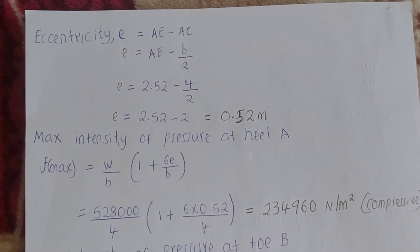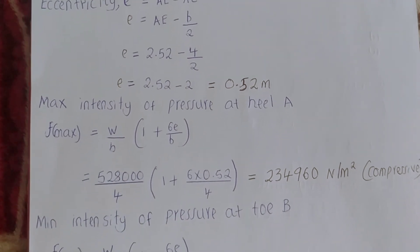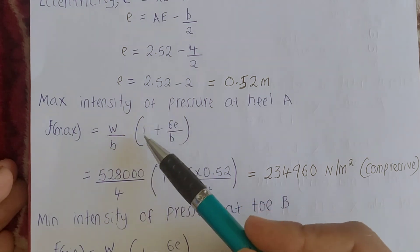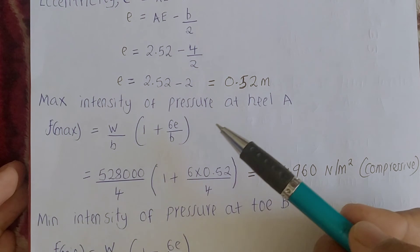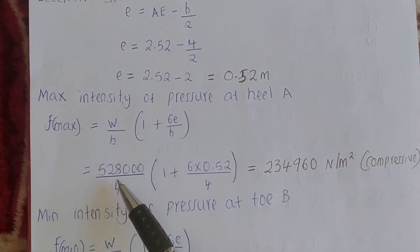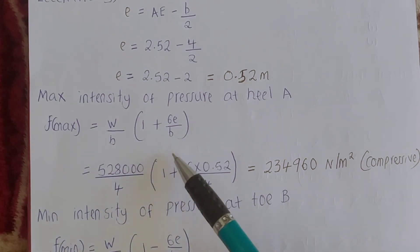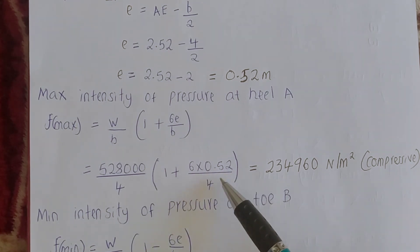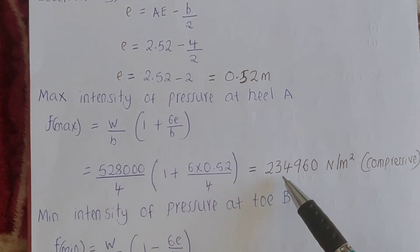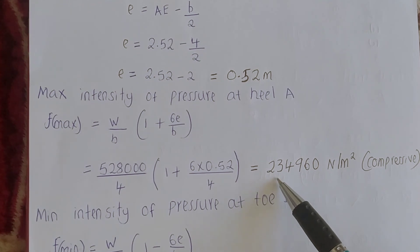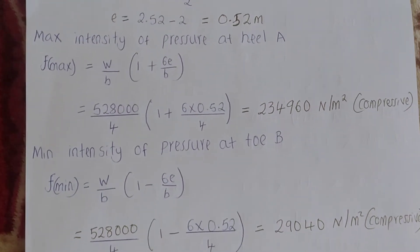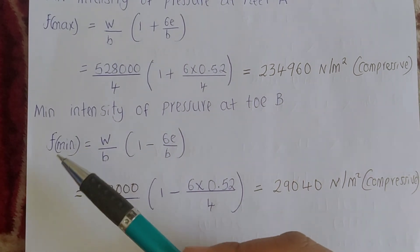Now we shall calculate the maximum pressure intensity at point B. f_max equals W/b × (1 + 6e/b). Substituting: 528,000 / 4 × (1 + 6 × 0.52 / 4). When you calculate this, you get 234,960 Newtons per meter squared, compressive.